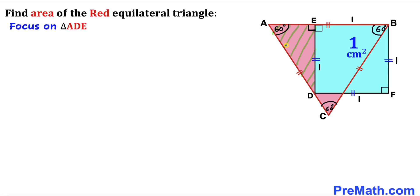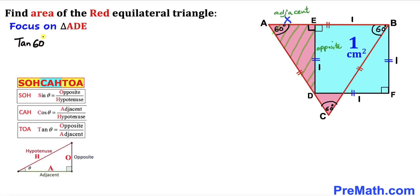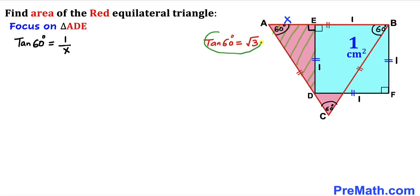Now let's focus on right triangle ADE. Let's assume side length AE is x cm. We are going to calculate x using SOH-CAH-TOA: tangent of 60° equals opposite divided by adjacent. In our case the opposite side is 1 cm and the adjacent side is x cm, so tan(60°) = 1/x. We know tan(60°) = √3, so √3 = 1/x.